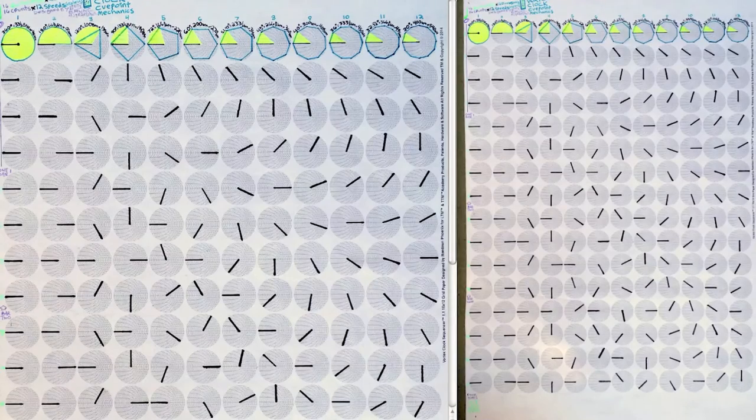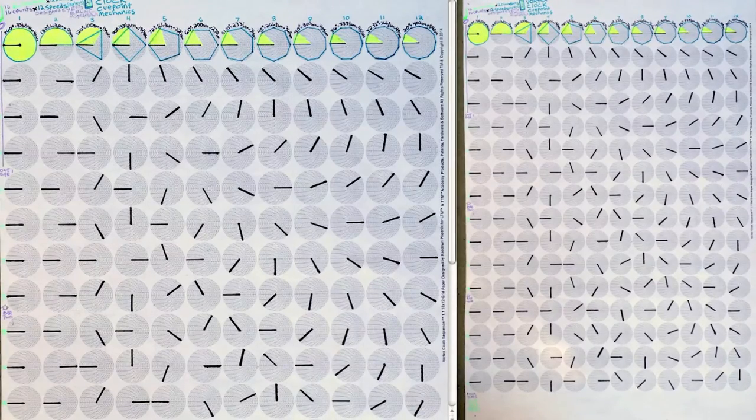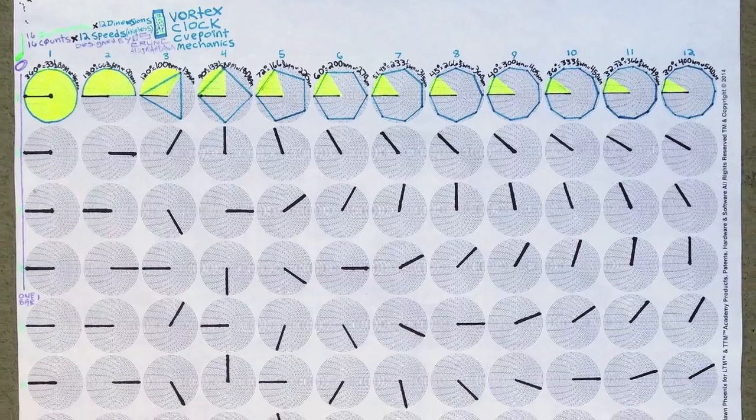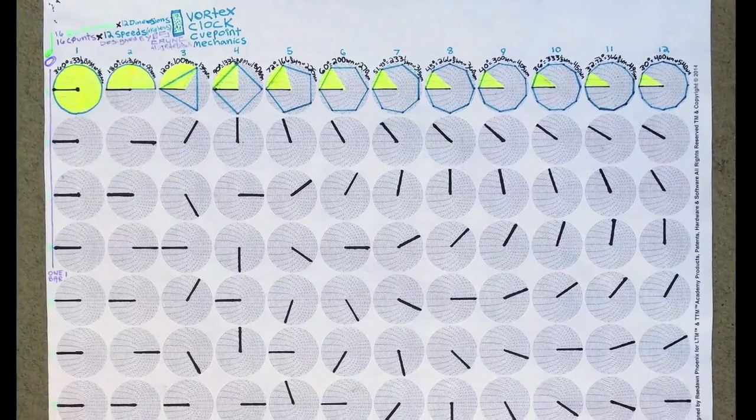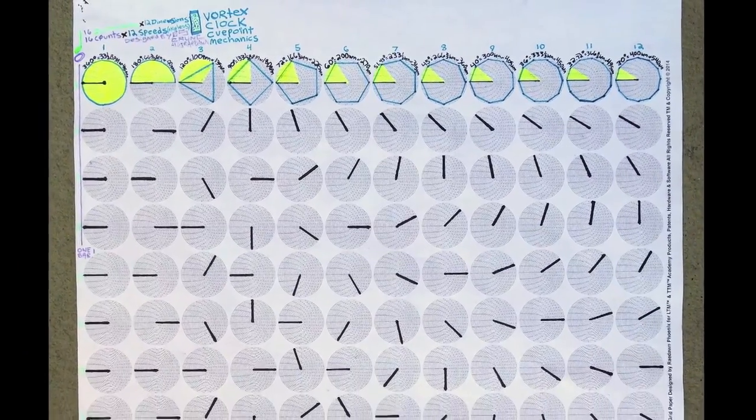Question: What is cue point geometry? Answer: Simply put, it is the breaking down of the continuous motion of a vinyl's cue point marker into geometric positions.